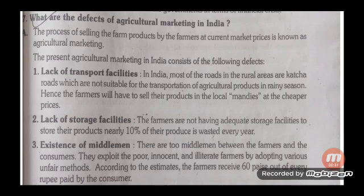First defect: Lack of transport facilities. In India, most roads in rural areas are kachcha roads, which are not suitable for transportation of agriculture products in rainy seasons. Hence farmers have to sell their products in local mandis at cheaper prices, meaning they do not receive the full price they deserve for their products.